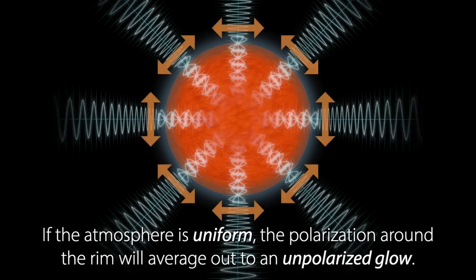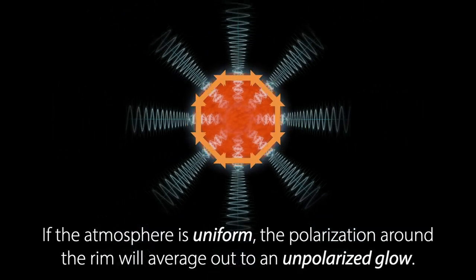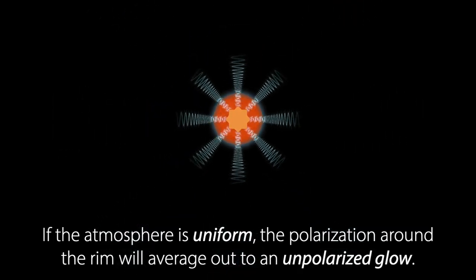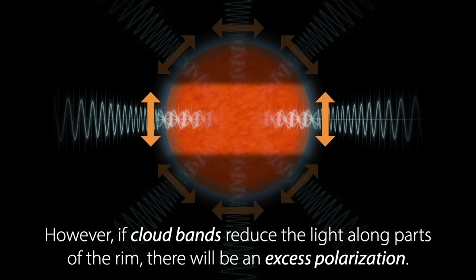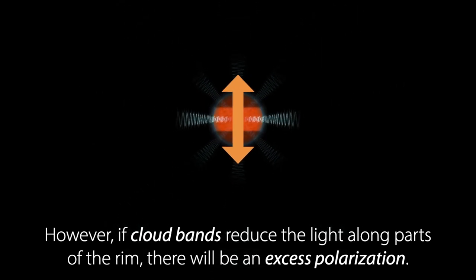If the atmosphere is uniform, the polarization around the rim will average out to an unpolarized glow. However, if cloud bands reduce the light along parts of the rim, there will be an excess polarization.